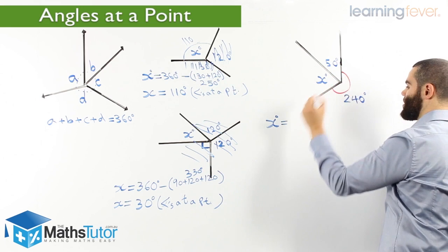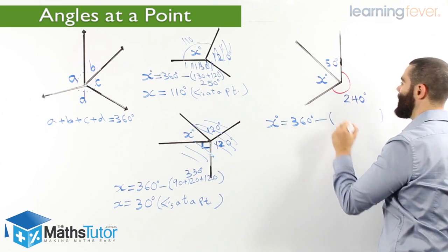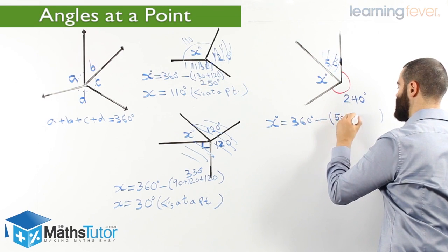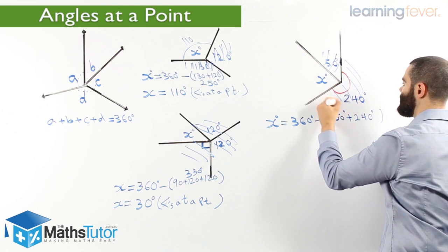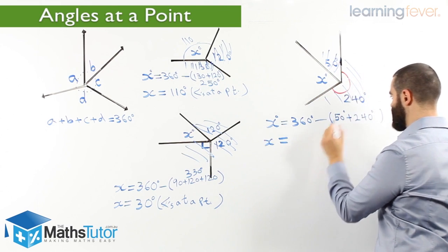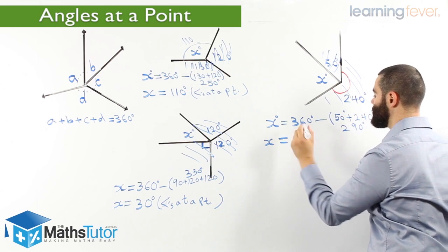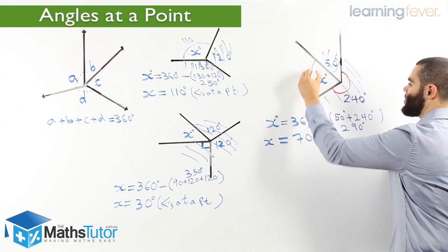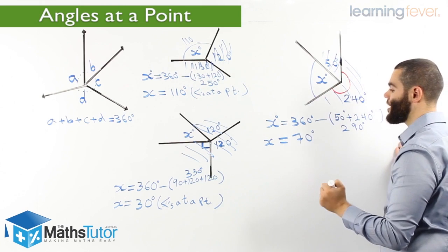We know the total is 360 degrees. Take away the angles that we don't need, which are the 50 and the 240 degrees. So 50 and 240 is 290 degrees. 360 take away 290 degrees — X must be 70 degrees. 70 degrees, 50, and 240 all together make 360.